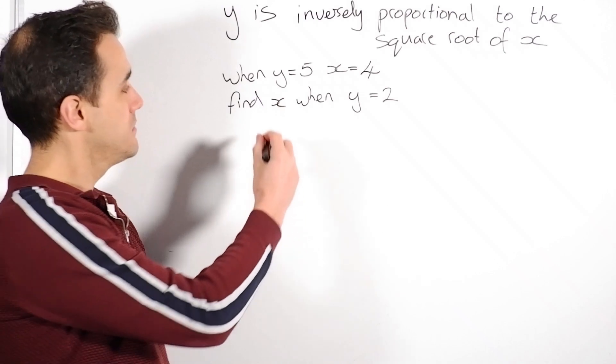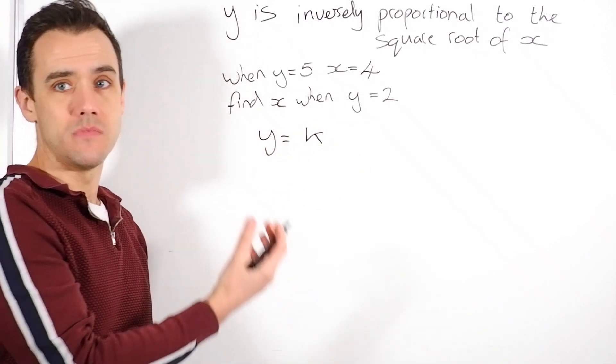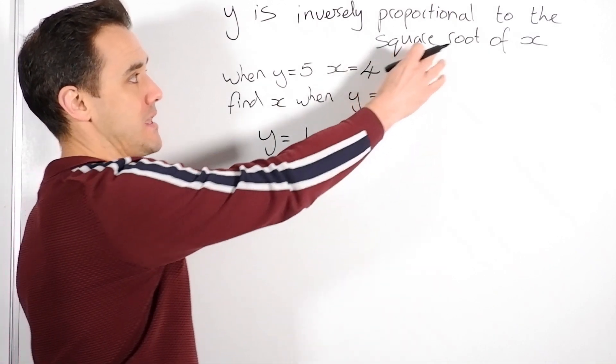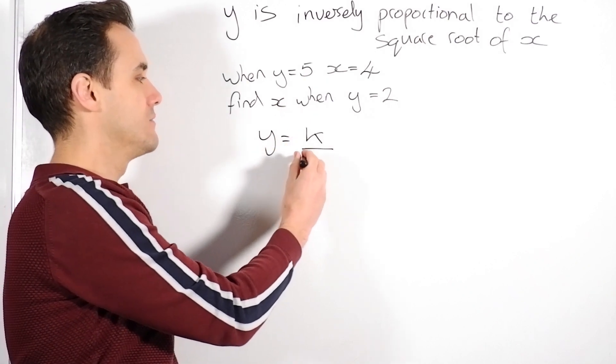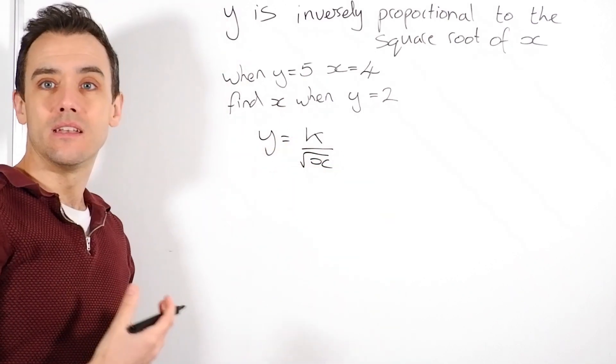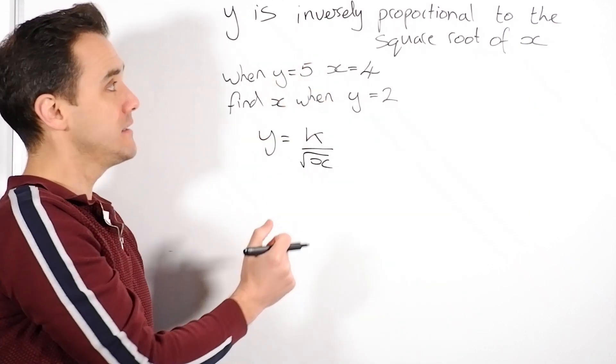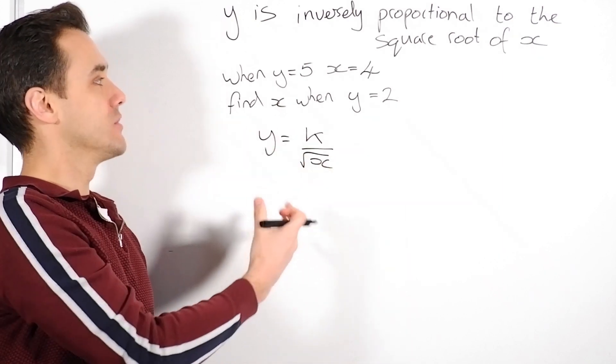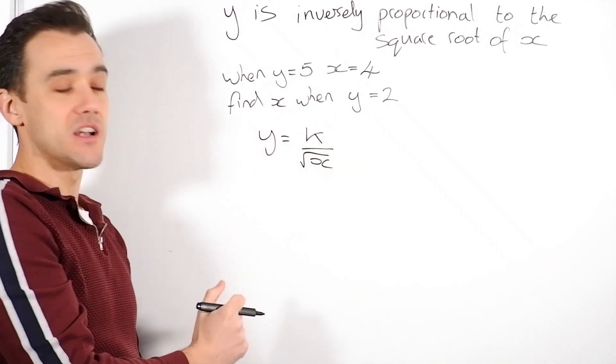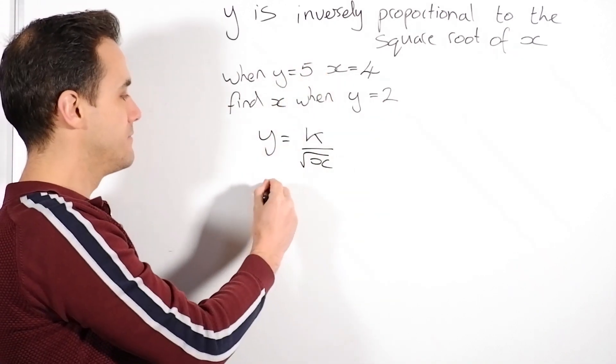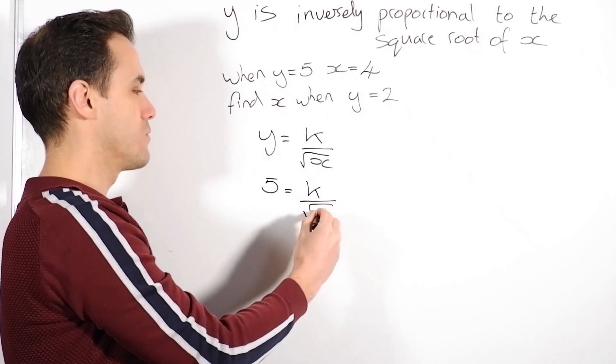So how's inversely proportional different? Well, it's pretty minor. Now we say y equals k. So starting exactly the same. But now instead of k times by our thing here is k divided by it. So now it'll be y equals k divided by the square root of x. Now we tackle the question in exactly the same way. So we're going to put our numbers in. We're going to find our k. First step, find our k. Put our values in. 5 equals k divided by the square root of 4.